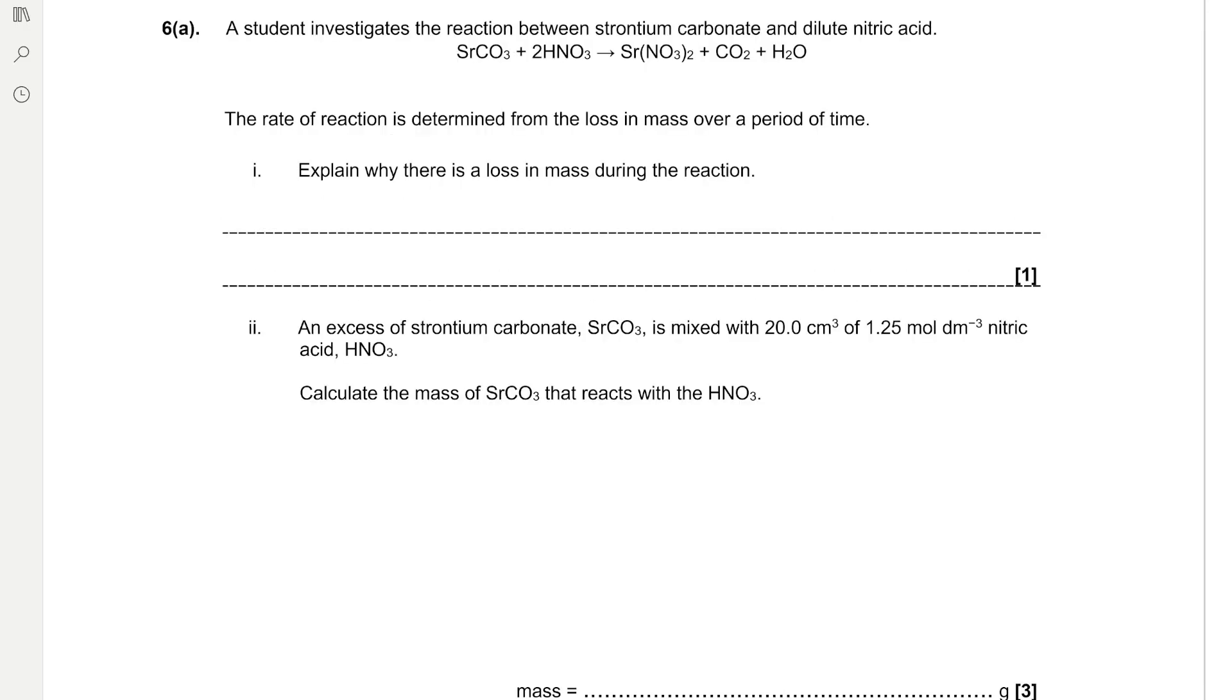Student investigates the reaction between strontium carbonate and dilute nitric acid. Strontium carbonate reacts with 2 moles of nitric acid to form strontium nitrate, carbon dioxide, and water. The rate of reaction is determined from the loss in mass over time. Explain why there was a loss in mass during the reaction. CO2 is being formed and CO2 is a gas at room temperature and pressure. As the gas forms it leaves the reaction mixture and that causes a loss in mass.